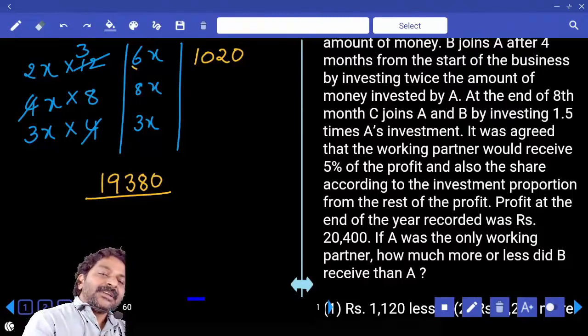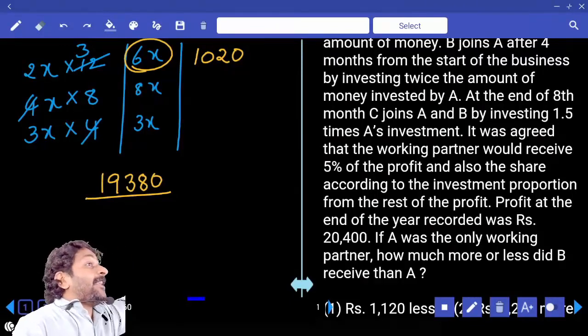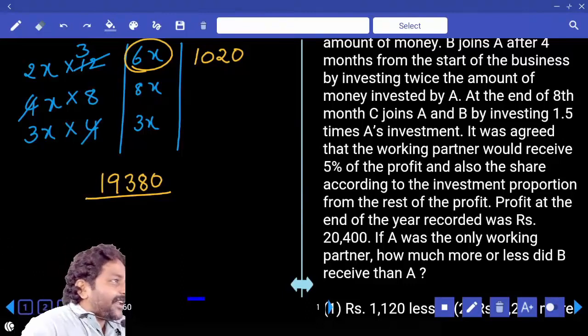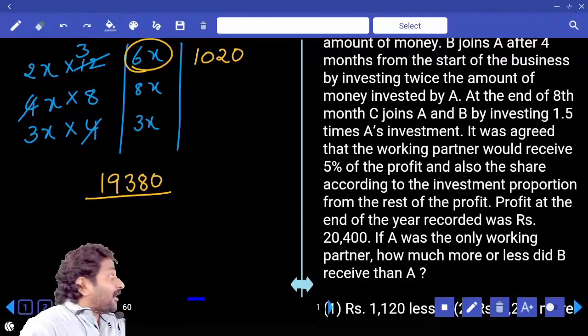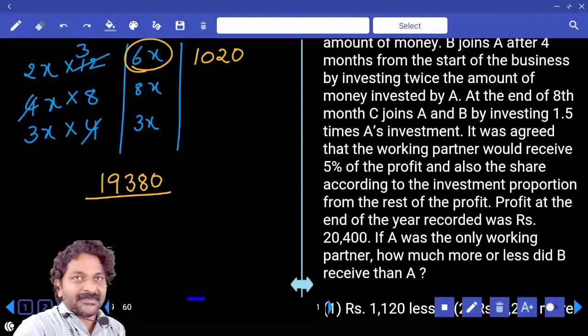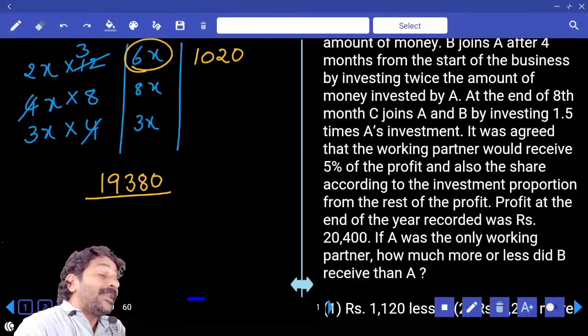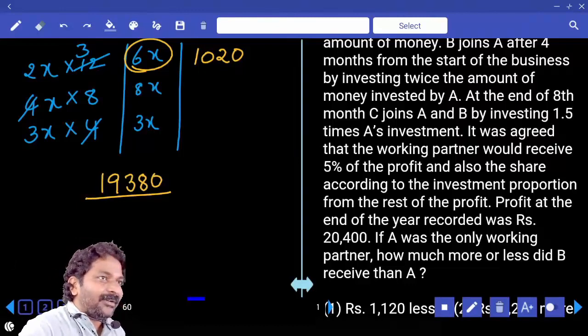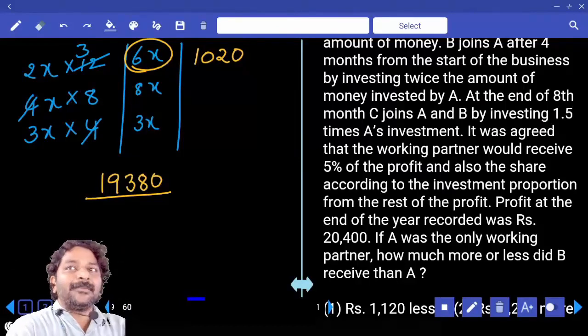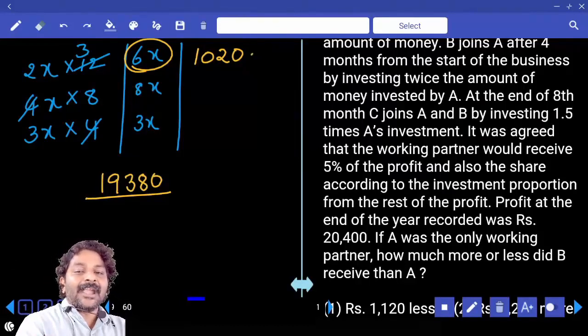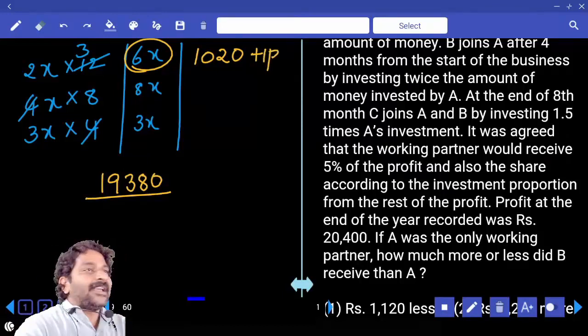Suppose if A is getting 9 parts and B is getting 8 parts among 19,380 rupees, out of A and B who will get more? Already A is getting 1,020 more, and extra he is getting 1 part more. So directly we can add 1 part value and get the answer.